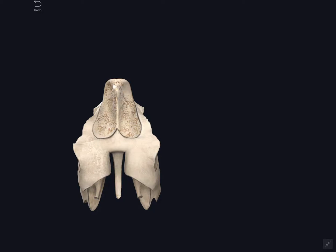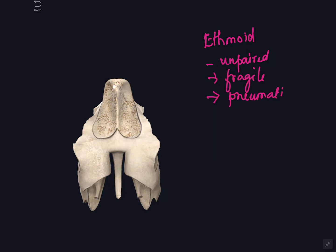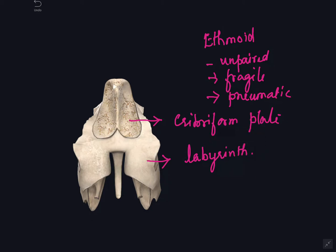In this video we are going to see about the ethmoid bone. The ethmoid bone is an unpaired, fragile, and pneumatic bone. It has two parts: a horizontal plate called the cribriform plate, and a cuboidal mass on either side called the labyrinth. The labyrinth is cuboidal, air-filled, and the fragile part of the bone.